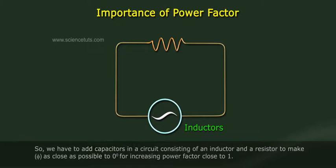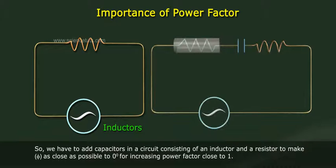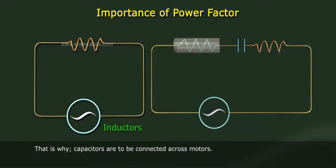So we have to add capacitors in a circuit consisting of an inductor and a resistor to make phi as close as possible to zero degrees, for increasing the power factor close to one. That is why capacitors are to be connected across motors.